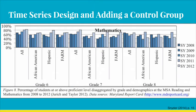A study completed in 2012 determined how arts education affects math achievement. The data here can be analyzed as a time series study for each group. What this data does not show is the data from a control group school. Once you add a control group to a time series design, it becomes multiple time series design.